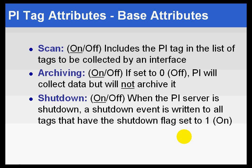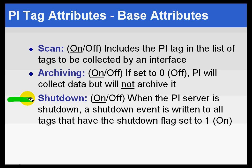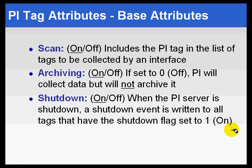Lastly, there are some attributes that can control some fundamentals and are pretty self-explanatory. For example, with scan equal to On, it simply means we are going to be actively scanning this tag by whatever interface or application is writing to it. Scan Off would effectively shut down the interface without deleting it. Archiving turns on and off whether we archive the data. And Shutdown works this way: whenever the PI Server is shut down, a shutdown event — which is a digital state — is written into the archive for all tags that have the shutdown flag set equal to one. There are other mechanisms for indicating that on the interface level, and we'll discuss how to set up these shutdown notifications later on.